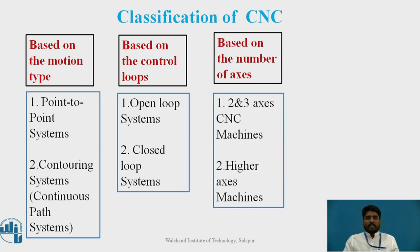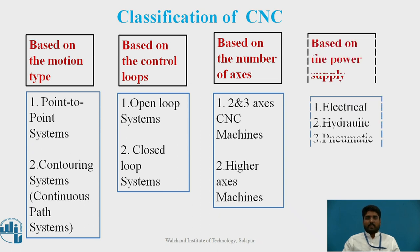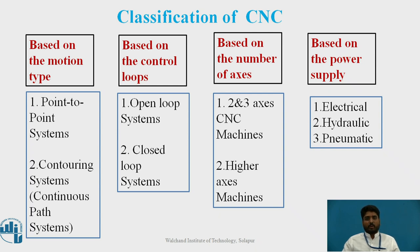The third classification is based on the number of axes. There are two and three axis CNC machines, as well as higher axis machines. The fourth classification is based on power supply, which can be electrical, hydraulic, or pneumatic.